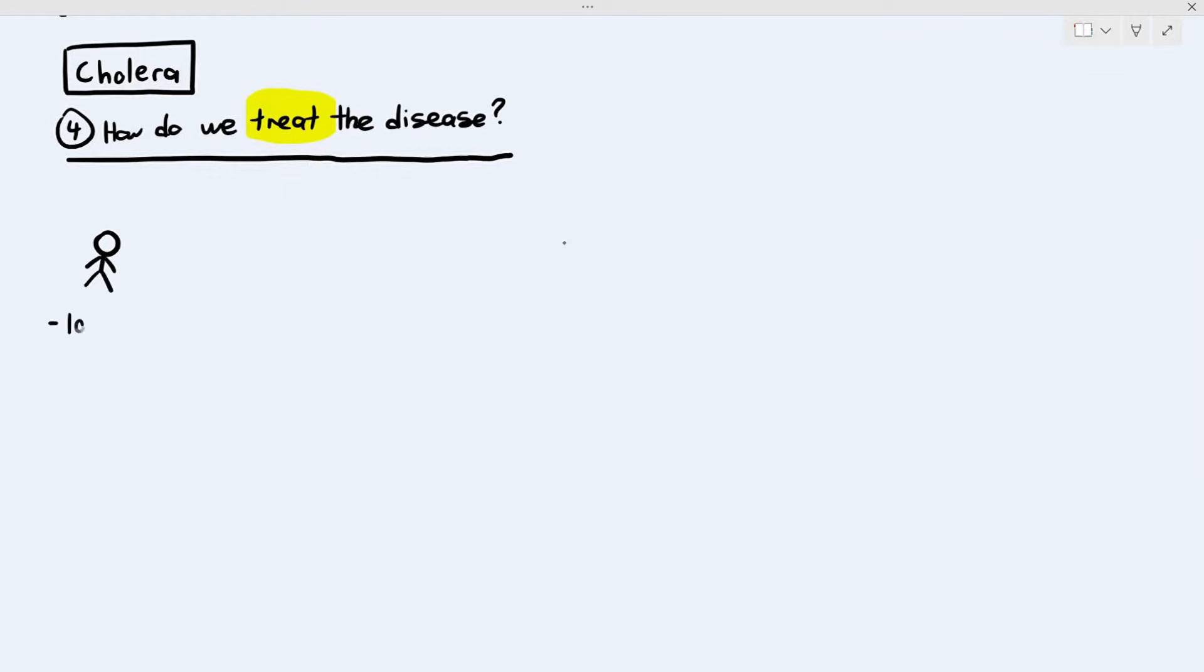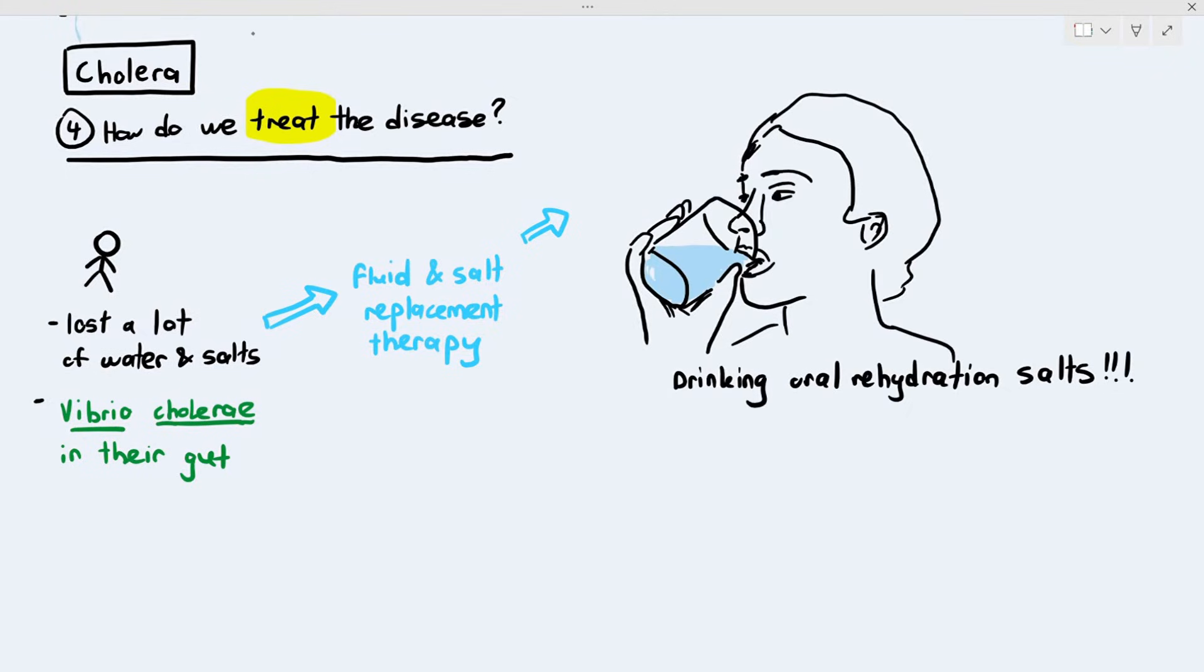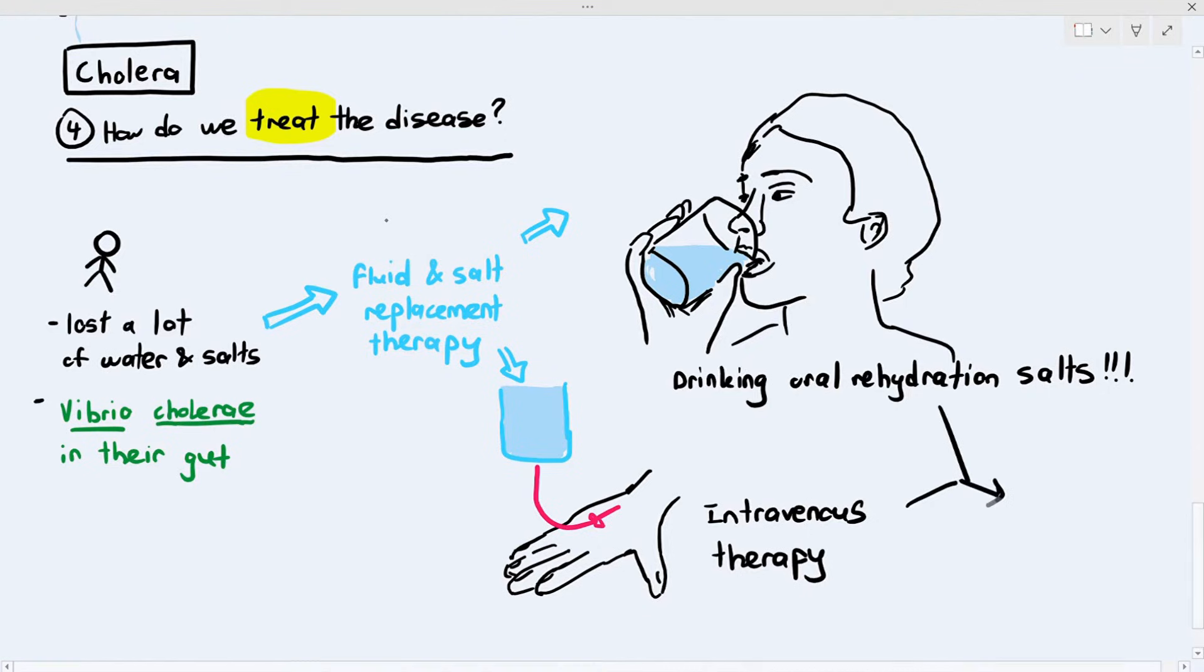In this case, how do we actually treat the disease, which is number four? Well, remember, the person has lost a lot of water and salts, and they also have the Vibrio cholerae bacteria in their gut. Because they lost a lot of water and salts from their body, the obvious thing you have to do is replace the fluid and salt that they have lost by a process known as fluid and salt replacement therapy. We basically ask the person to drink water and some salts, which is called oral rehydration salts. You can get this in the pharmacy, or if the person is too weak to drink the water and oral rehydration salts, then you have to give them intravenous therapy. Intravenous therapy is when we put a needle into their veins and inject water and salts into their body.